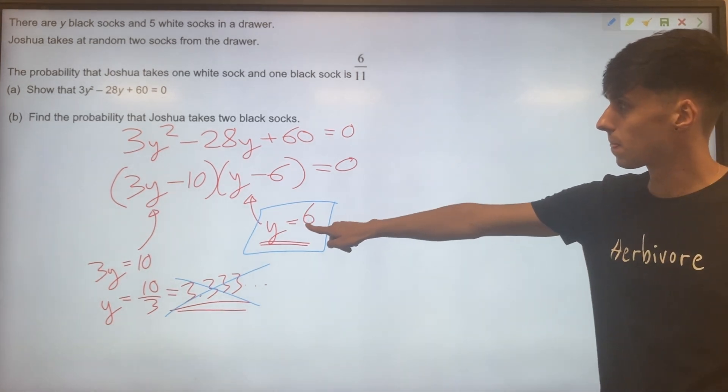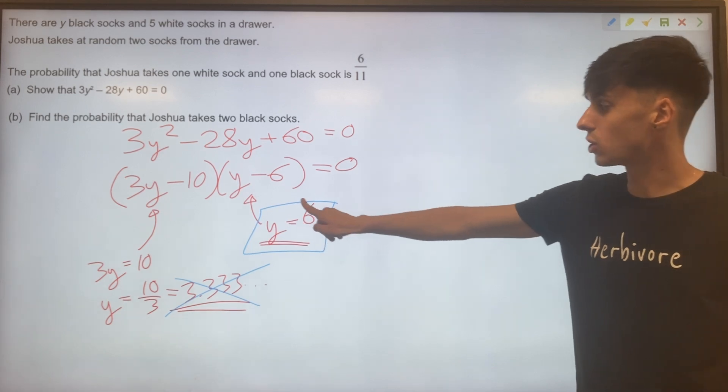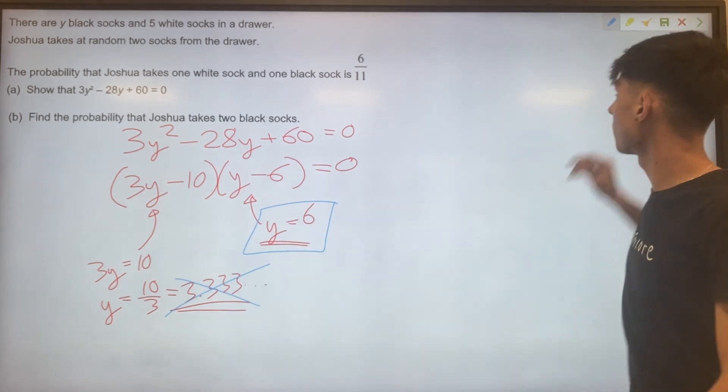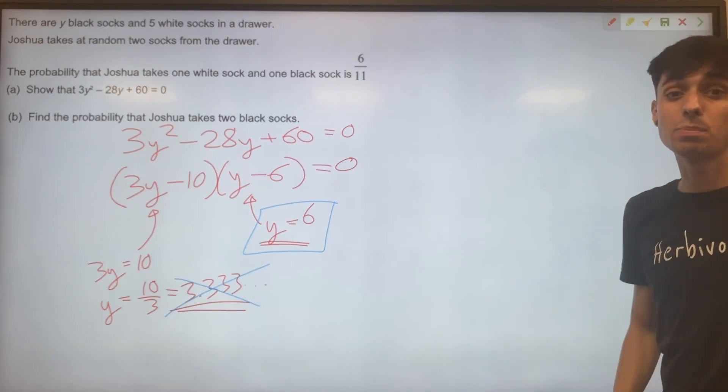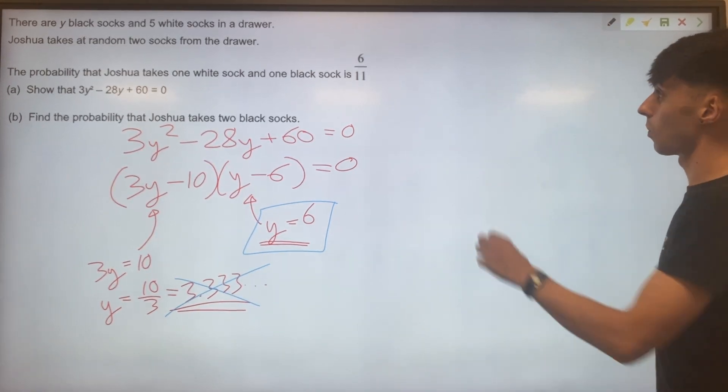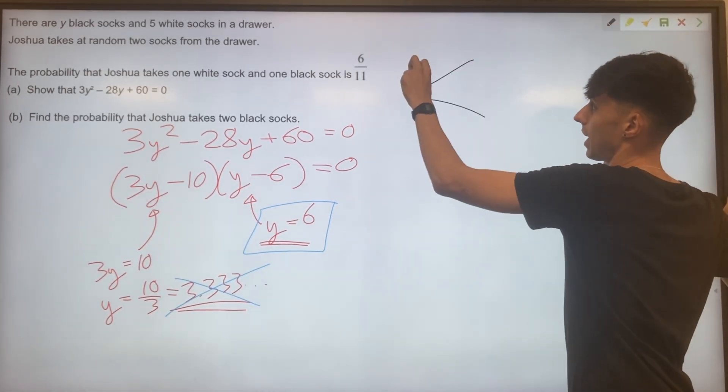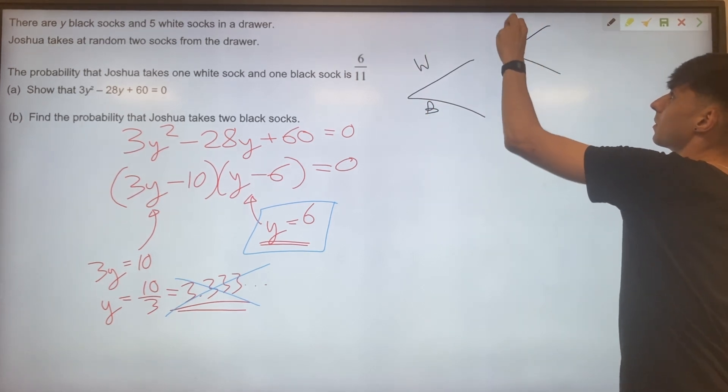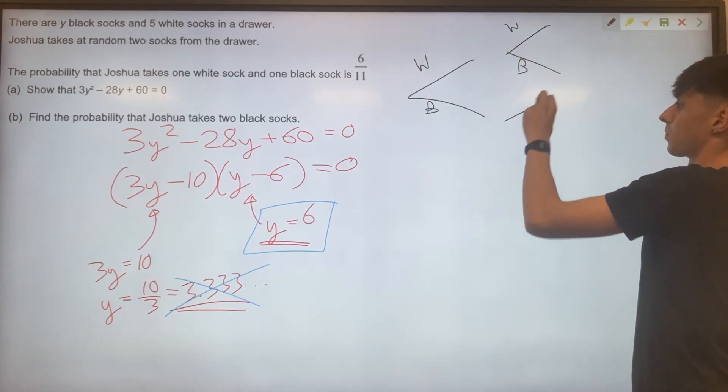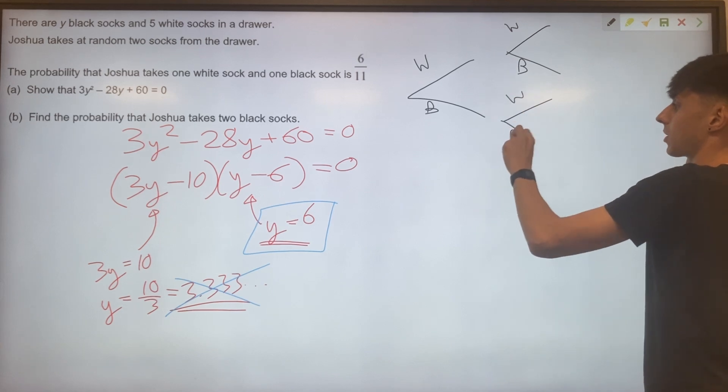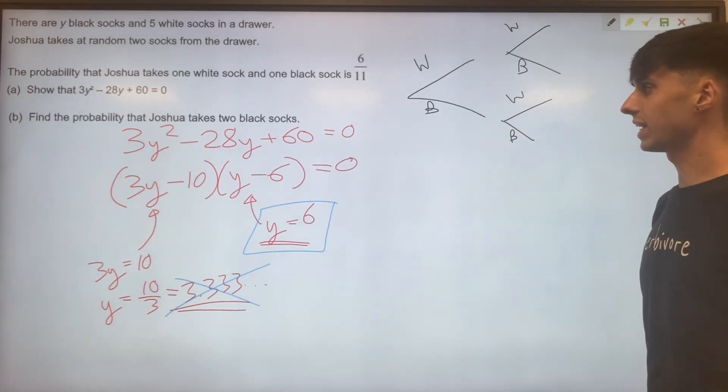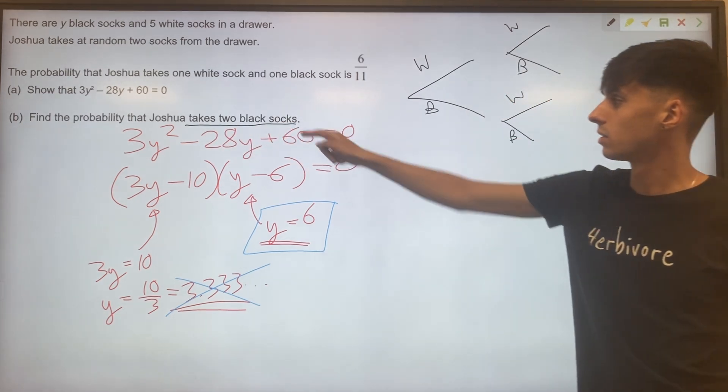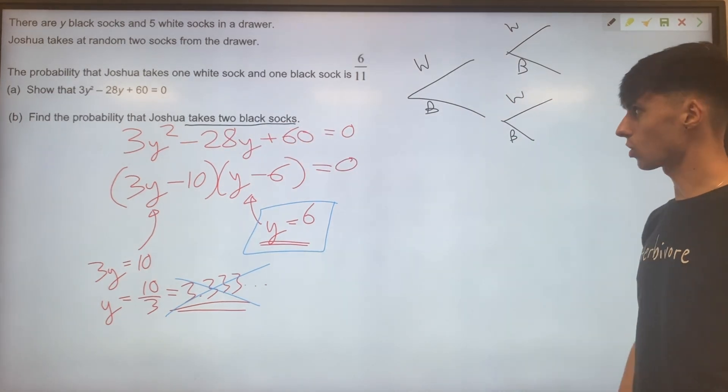Finishing off this question then, what we found is that the number of black socks was 6. So let's just remind ourselves of the type of tree diagram that we were working with. Where we had, I think I put white at the top, white black, white black, white black. We don't need to fill in everything because we're only interested in the probability that Joshua takes two black socks.